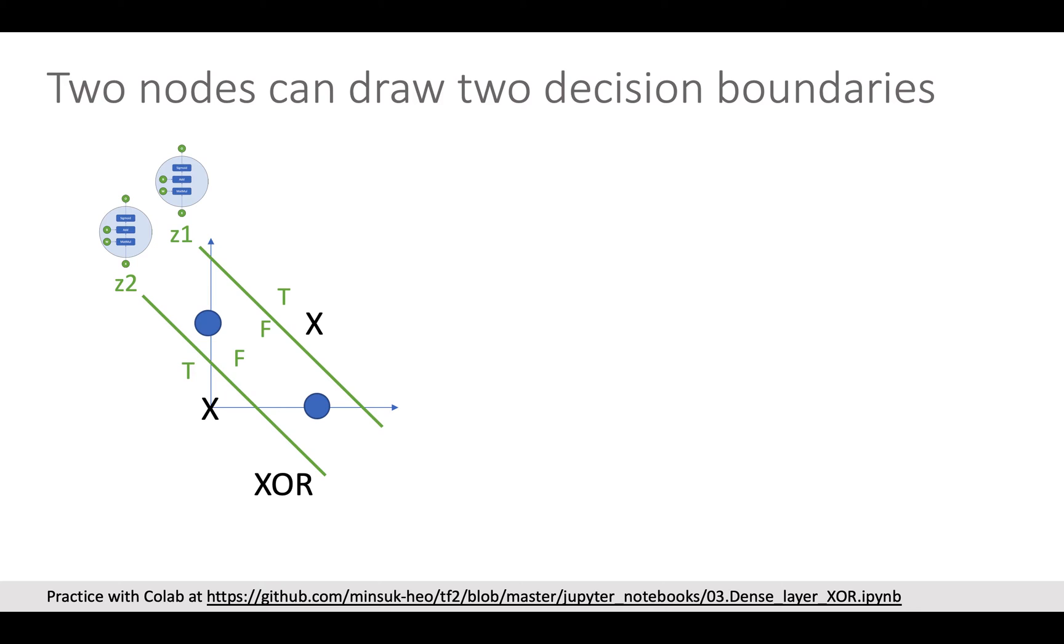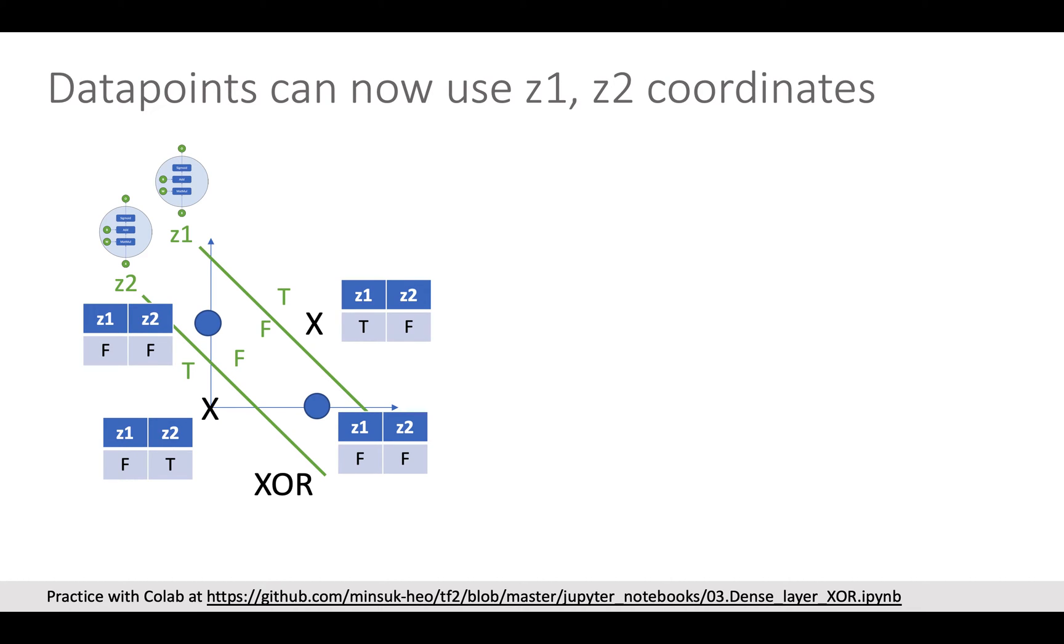Since one node draws one decision boundary, at least we can draw two decision boundaries using two nodes. Let's say first node is Z1 and the second node is Z2. And since each node output is sigmoid function output, we can say if the output value is greater than 0.5, the output is true or the output is false. I marked one side from the decision boundary as true and the other side as false.